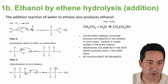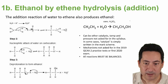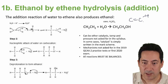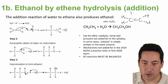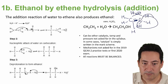The second way to produce ethanol is by hydration of ethene — basically an addition reaction. We take ethene from crude oil and add water. The water breaks into H and OH, the bonds break, and you get ethanol as the product. You need to know that reaction.